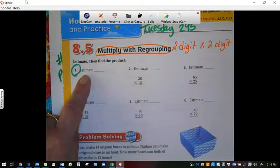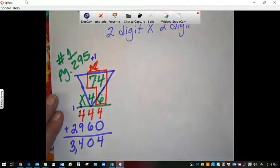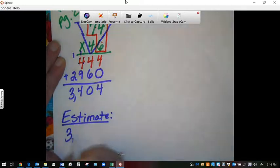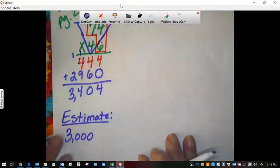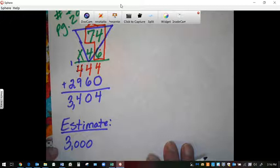Number 1 does ask you to estimate. So when we estimate, your answer would be 3,000. So 3,404 is your answer to the actual multiplication problem. And your estimate would be 3,000.